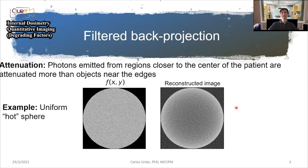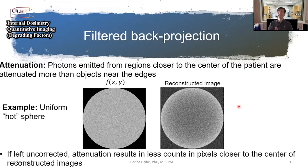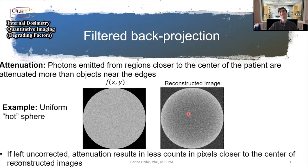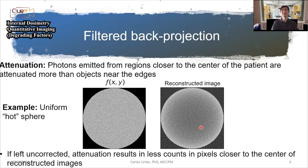If we leave this uncorrected and we go to measure something in that image — say we draw a region of interest in the middle — we're going to be obtaining fewer counts than what should actually be there. So there's a problem with that image; it's not giving us the true information.